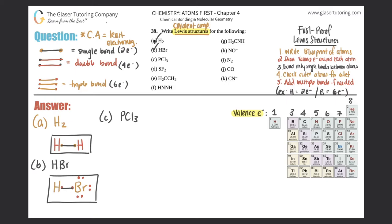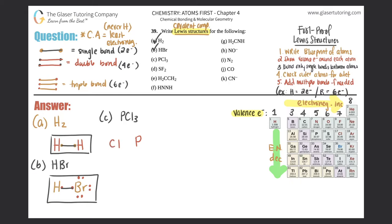The electronegativity trend: as you go from left to right across a period, electronegativity increases. As you go from top to bottom, electronegativity decreases. Between phosphorus and chlorine, chlorine is more electronegative since it's further right, so phosphorus is the central atom. The blueprint is one phosphorus in the middle surrounded by three chlorines.